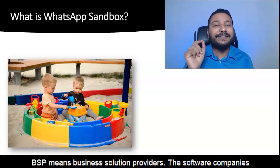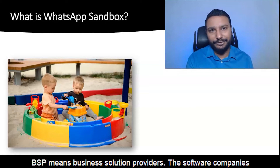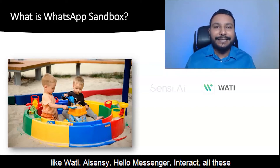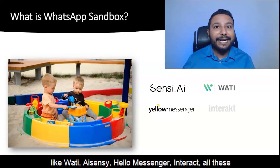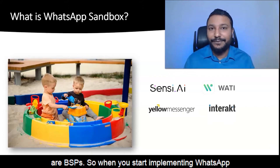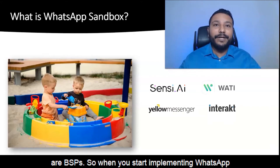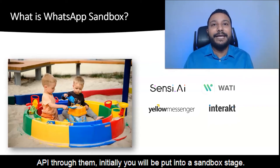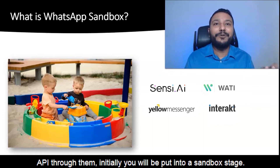BSP means Business Solution Provider. Software companies like Wati, AISNC, Hello Messenger, and Interact — all these are BSPs. So when you start implementing WhatsApp API through them, initially you will be put into a sandbox stage.